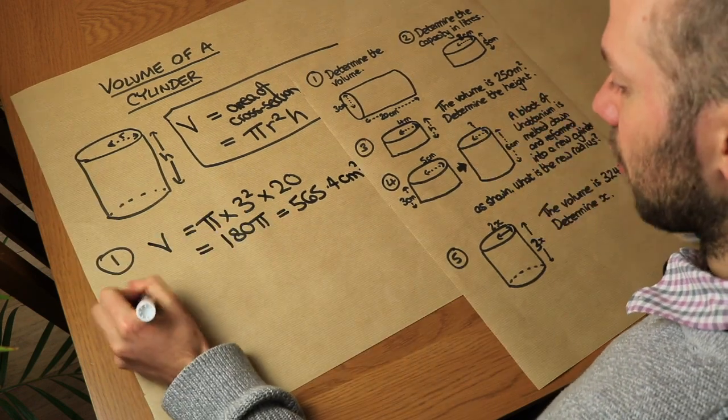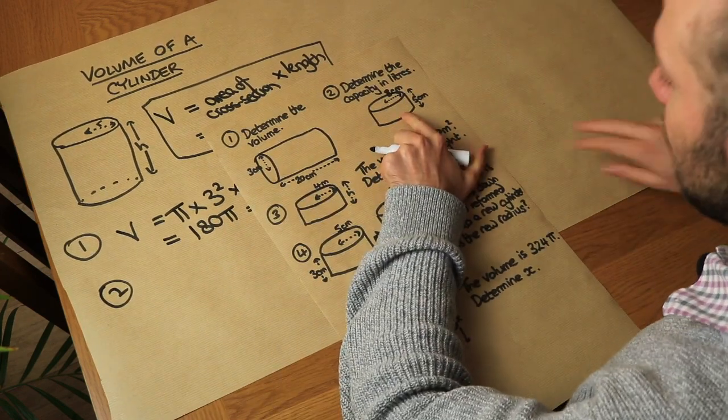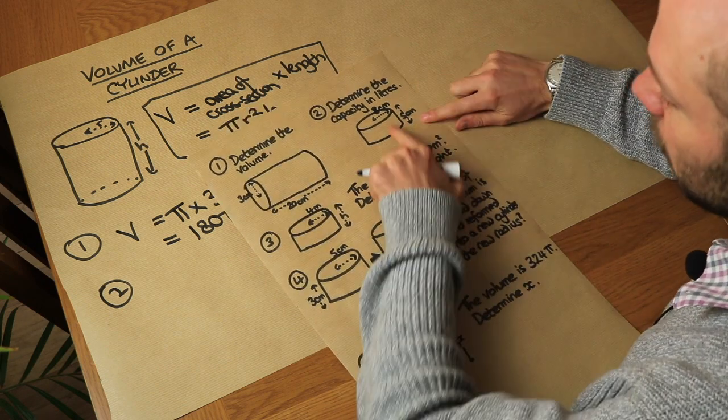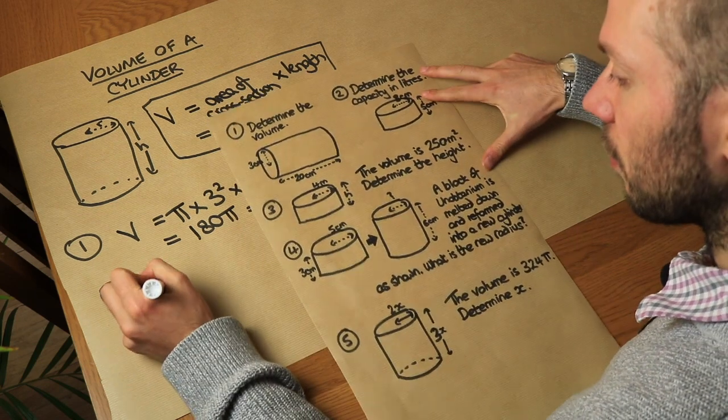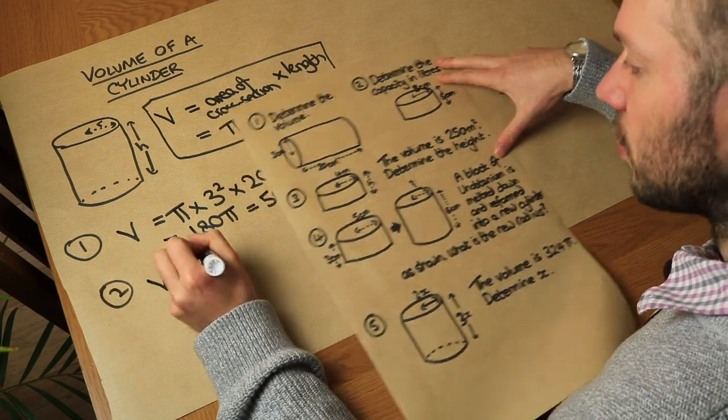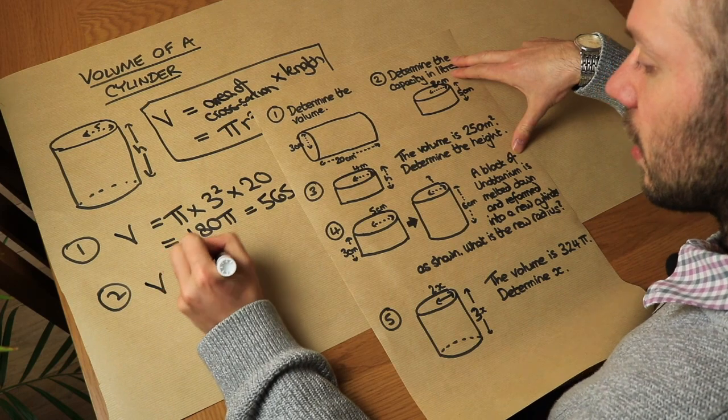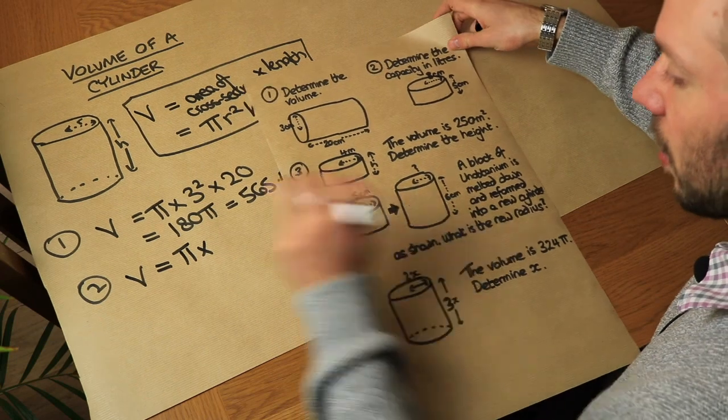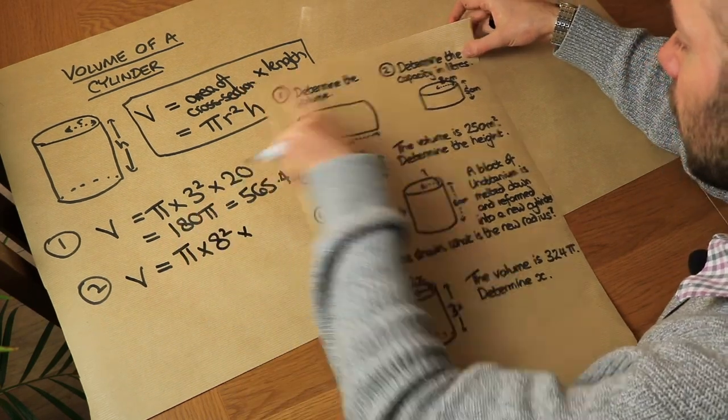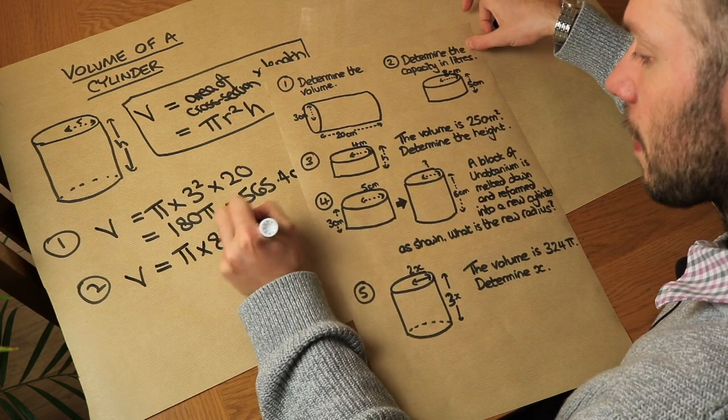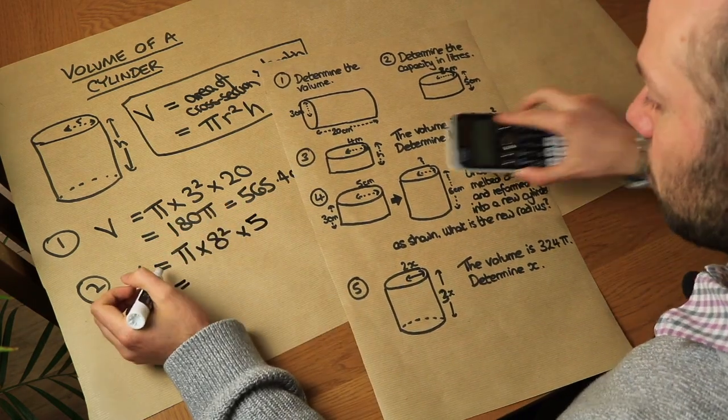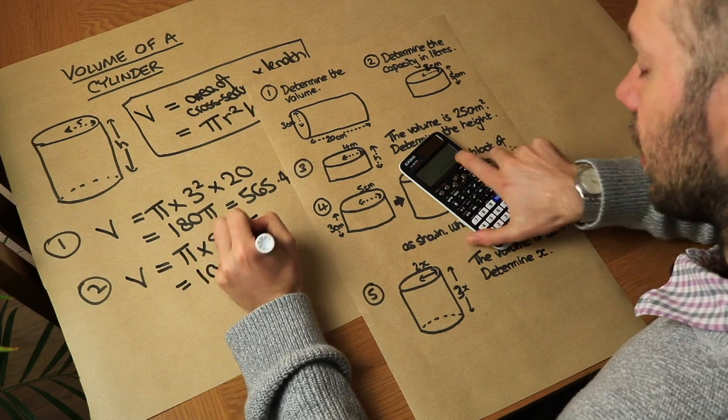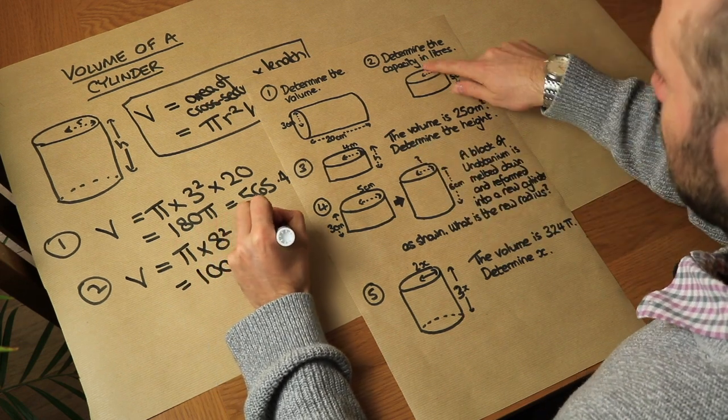What about the second problem? So we want to determine the capacity of this cylinder in liters. Now let's just work out the volume in centimeters cubed first. So we've got the volume is equal to pi times by the radius squared, so the radius here is 8. So we do pi times 8 squared times by the height which is 5, and that is equal to 1005.3 centimeters cubed because these are in centimeters.